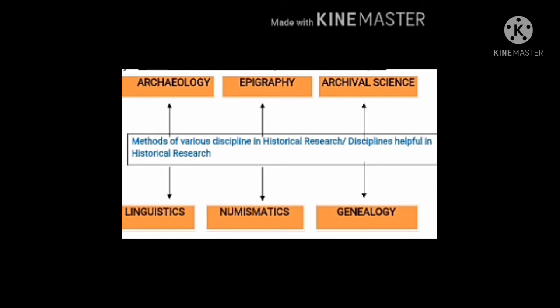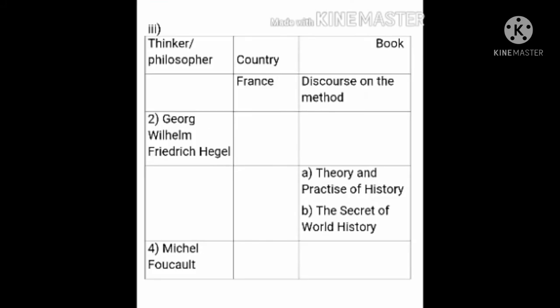Now complete the table. This table is classified into three parts: the thinker or philosopher's name, the country the philosopher belongs to, and the name of the book written by the philosopher. The first column is empty, so we read the book name — the book is Discourse on the Method. That book was written by René Descartes, so the answer is René Descartes.